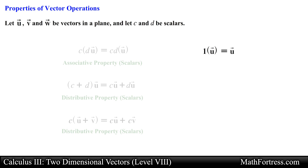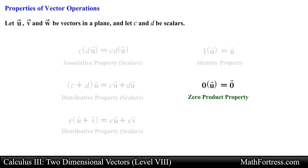Next, scalar 1 times vector u is equal to vector u — this is similar to the identity property of multiplication, also known as the multiplication property of 1 for real numbers. Lastly, scalar 0 times vector u is equal to the zero vector, similar to the zero product property of multiplication for real numbers.